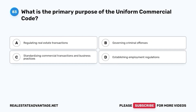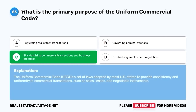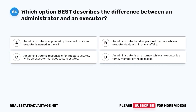Question 83. What is the primary purpose of the Uniform Commercial Code? The correct answer is C. Standardizing commercial transactions and business practices. The Uniform Commercial Code (UCC) is a set of laws adopted by most U.S. states to provide consistency and uniformity in commercial transactions, such as sales, leases, and negotiable instruments.